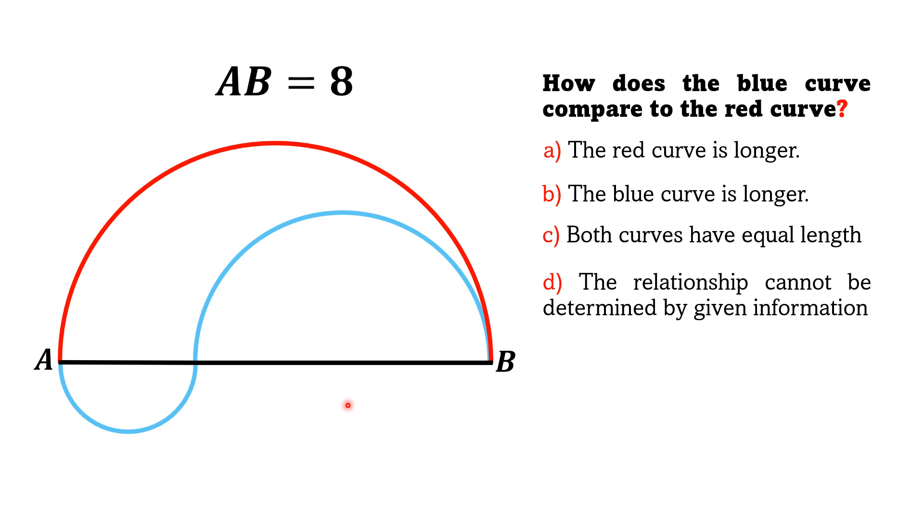Let me move towards the solution and label this point of contact of the blue curve as C. Now, let me call the length AC as x, then the length BC is 8 minus x.